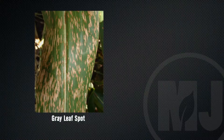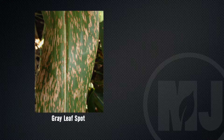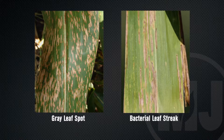One thing that we emphasize is that gray leaf spot lesions tend to have very rectangular shapes with smooth, linear margins. In contrast, this bacterial disease very commonly has wavy margins.